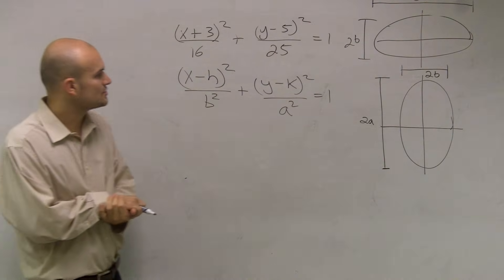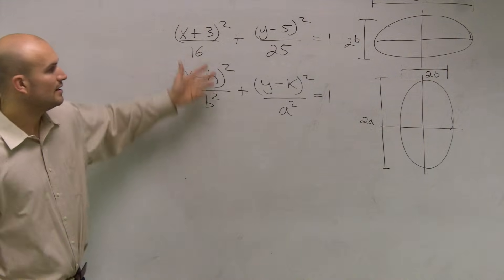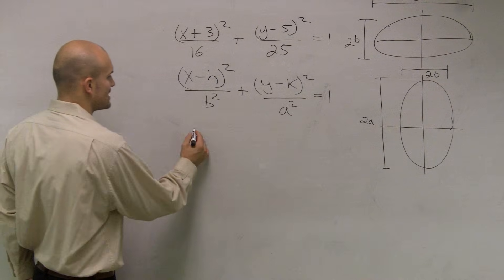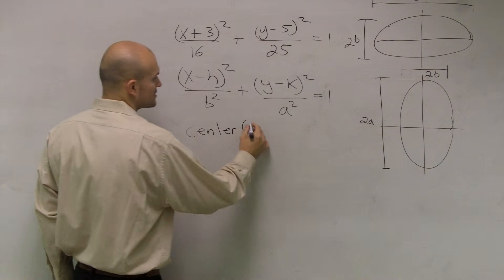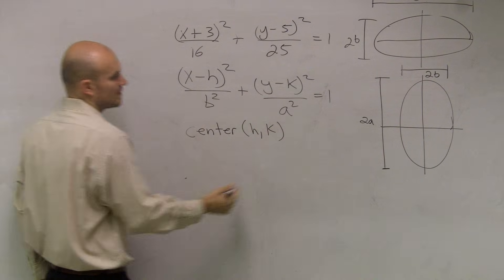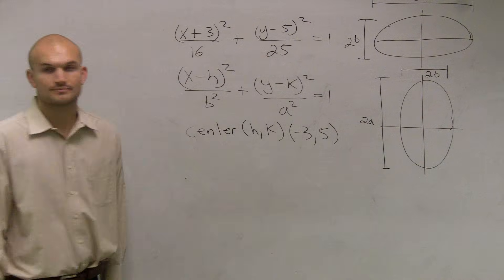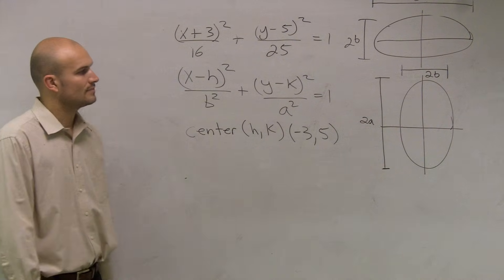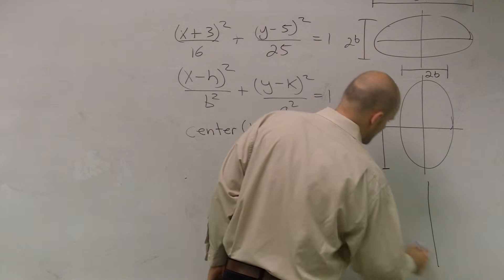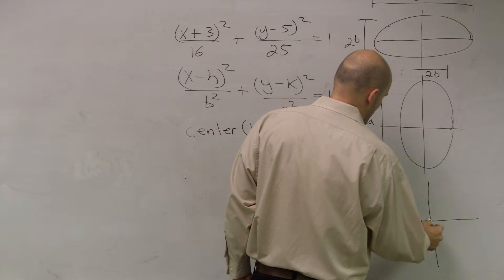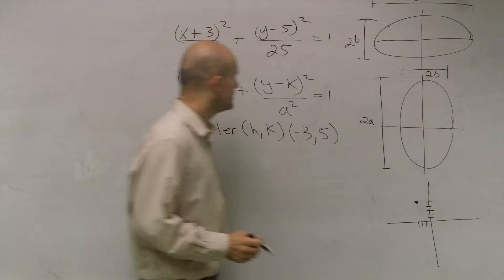So they want us to determine our vertices, or I'm sorry, first our center. Well, in this problem, guys, remember center is going to be the exact same as our vertex in parabolas. So center is going to be h comma k. In this problem, we have negative 3 comma 5. So I'll graph something over here. 1, 2, 3, 1, 2, 3, 4, 5.